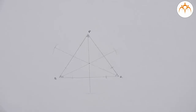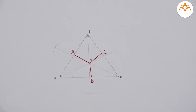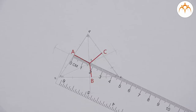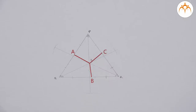The point of concurrence is termed the incenter and is denoted by the letter I. In triangle PQR, the sides PQ, QR, and PR lie at an equal distance from point I. If you draw the perpendiculars IA, IB, and IC from point I on the sides PQ, QR, and PR respectively, you get the distances of these sides from the incenter I. Measure the lengths of all three perpendiculars: all three are equal in length, i.e., IA is equal to IB is equal to IC.